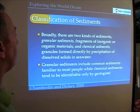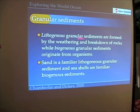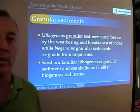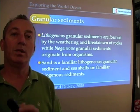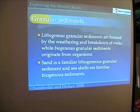Granular sediments may be lithogenous, meaning they form from the weathering and breakdown of rocks — igneous, metamorphic, or sedimentary rocks. Biogenous granular sediments come from organisms. So granular sediments can be broken down further into whether they are inorganic or lithogenous, or organic biogenous. Sand is a familiar lithogenous granular sediment, and seashells are a familiar biogenous sediment.